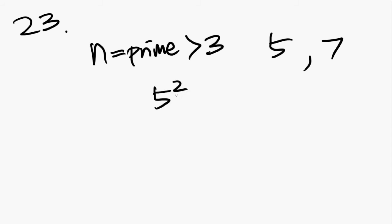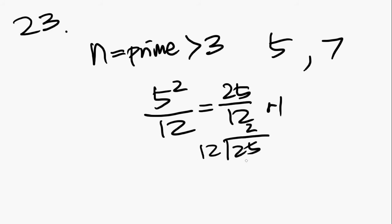Number 23 says, if n is a prime number greater than 3, what is the remainder when n squared is divided by 12? Let's pick and choose some numbers. 5 is a prime that's greater than 3, so is 7. Let's try out these numbers. So if you take 5 and you square it, and then you divide by 12, you get 25 over 12, and the remainder is going to be 1. Because, 12 goes into 25, 2 times 12 is 24, you get 1. So the remainder is 1.